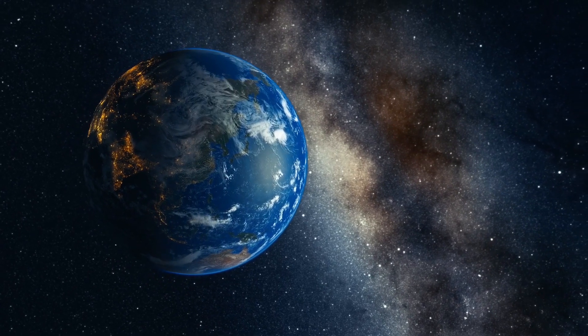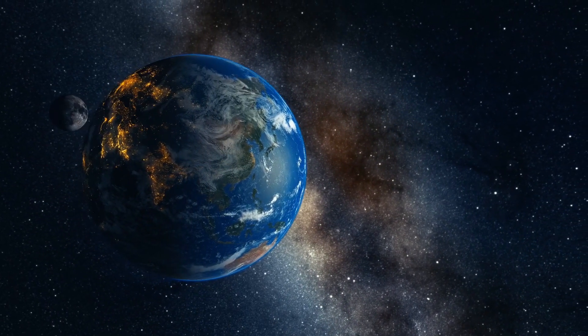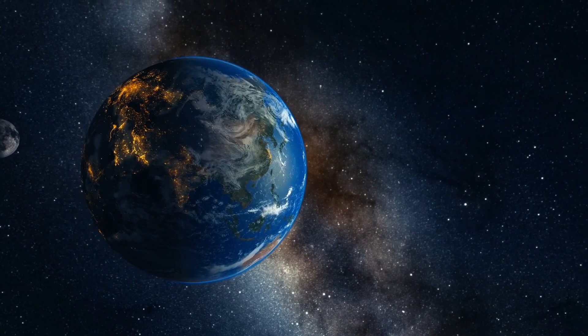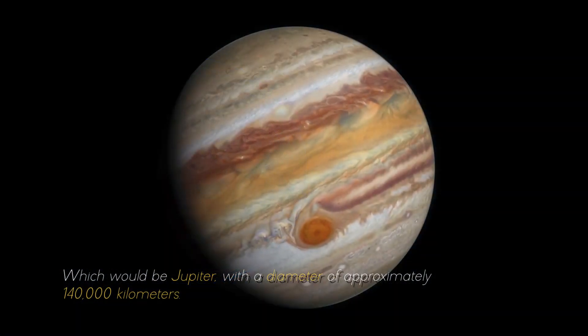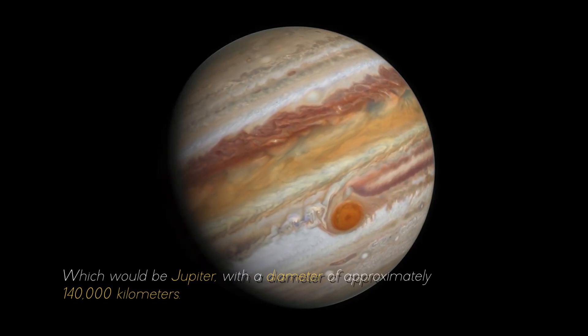If we compare it with the largest planet in our solar system, it would look like a ping-pong ball in front of a soccer ball, which would be Jupiter, with a diameter of approximately 400,000 kilometers.